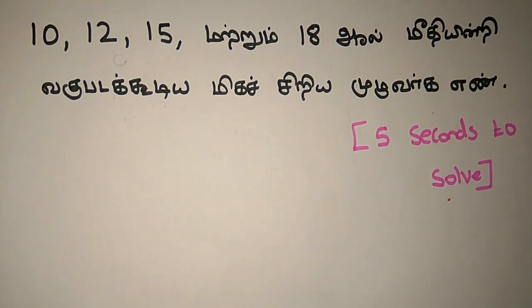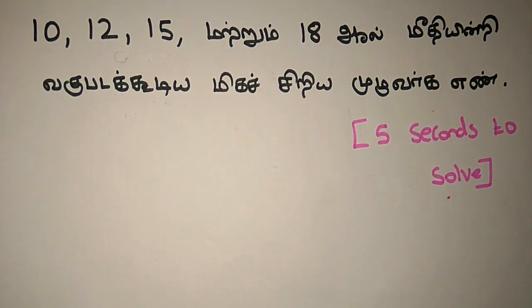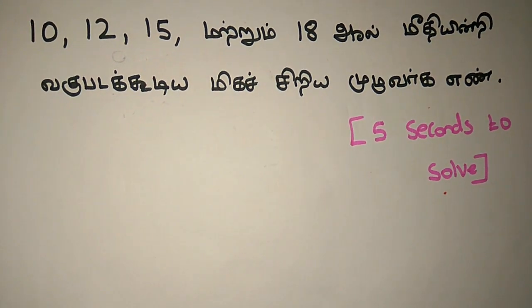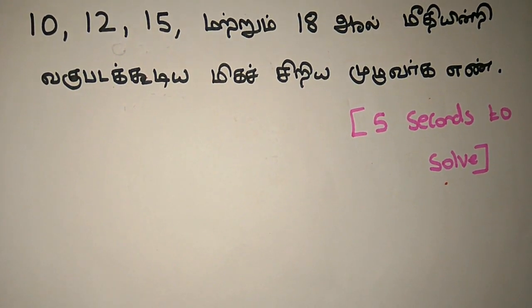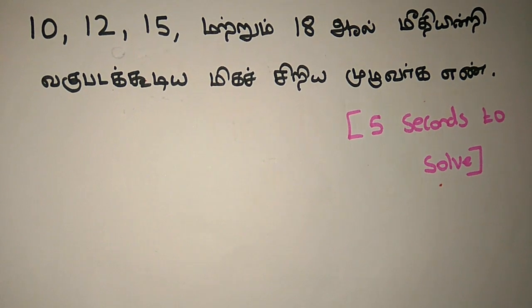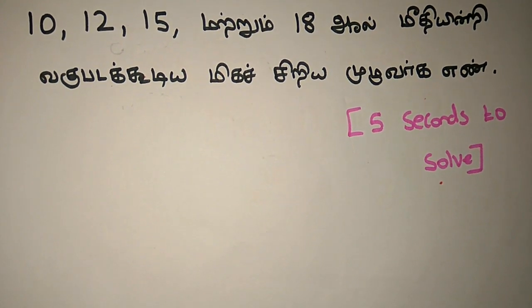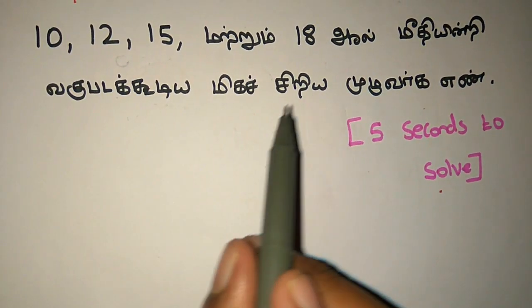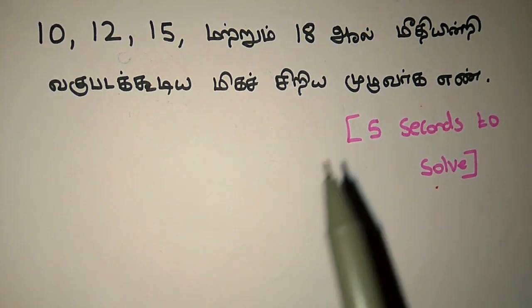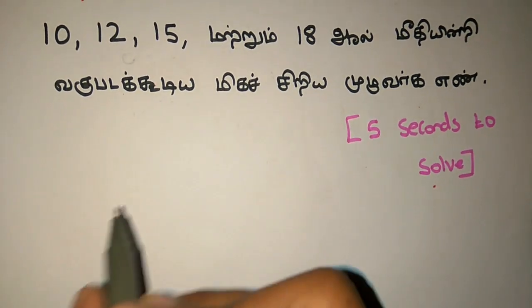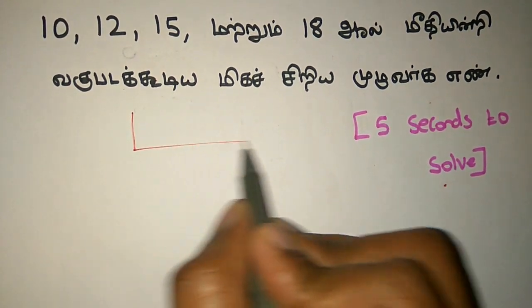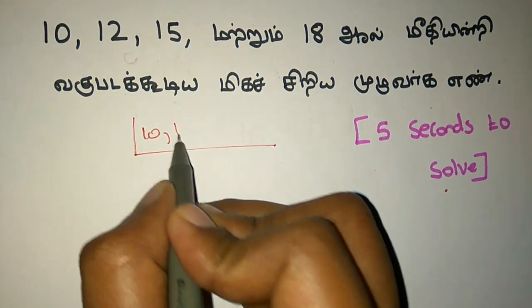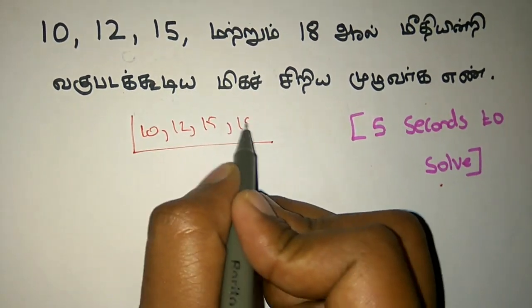Hello. Good evening. So we can take about 10, 15, 18. The number of 10, 15, 18 is 10, 15. If you do this, 1, 20, 18. Now, 1, 20, 18, 5, 6, 15, 18.